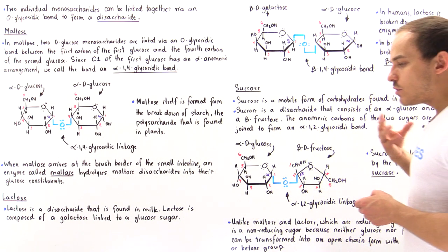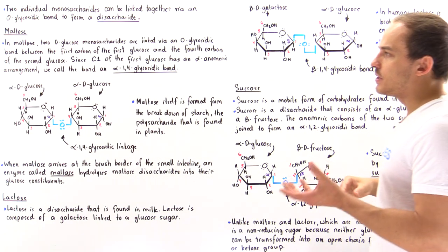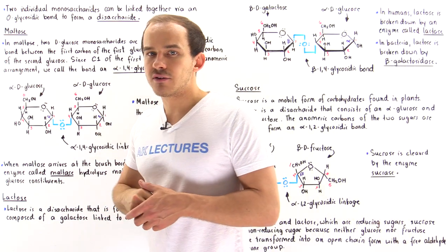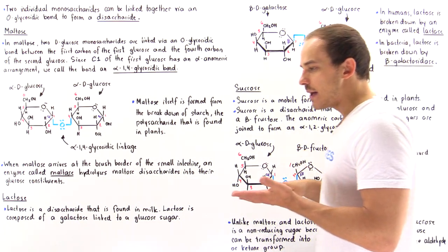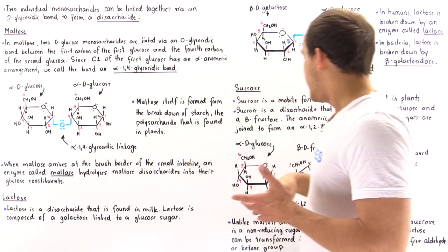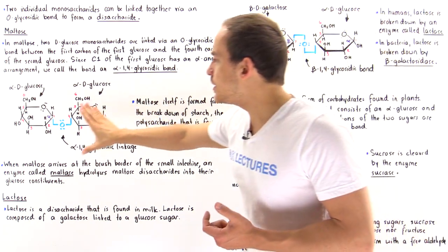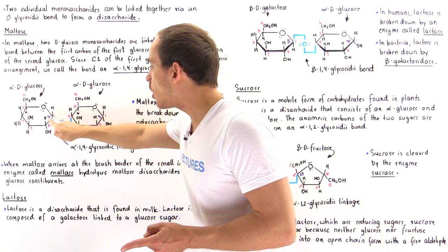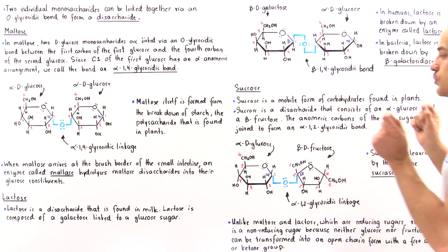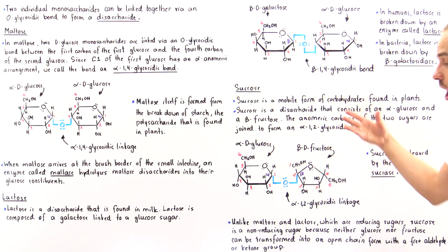Finally, let's look at sucrose — table sugar — which is the mobile form of carbohydrates found in plants, obtained from cane or beet plants. Sucrose is a disaccharide consisting of glucose and fructose, where fructose exists as a five-membered sugar. Unlike maltose and lactose where the bond is between carbon one and carbon four, in sucrose the bond is between the two anomeric carbons of the two different sugar molecules — specifically carbon one of glucose and carbon two of fructose.